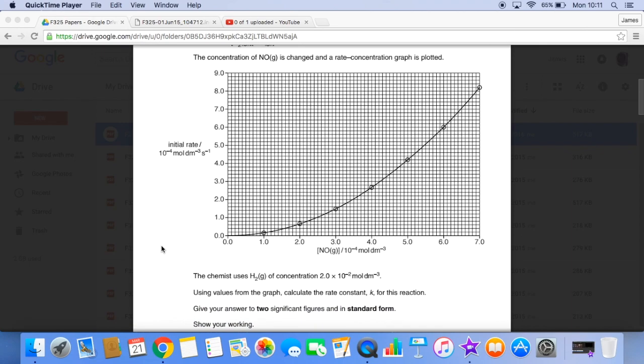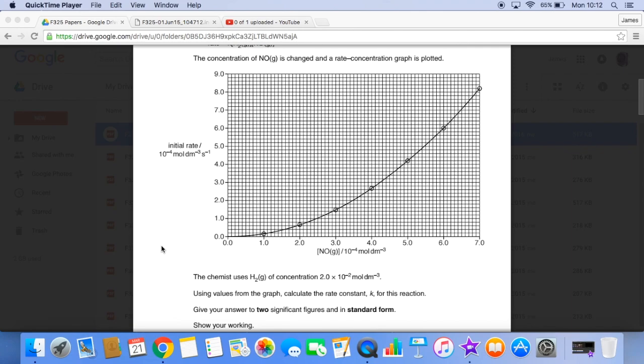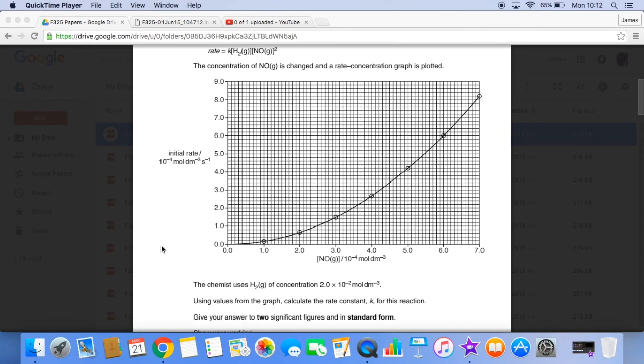Told that the chemist uses hydrogen of concentration 2 times 10 to the negative 2 moles per decimeter cubed. Using values from the graph, calculate the rate constant K. We must give it to two significant figures and in standard form.